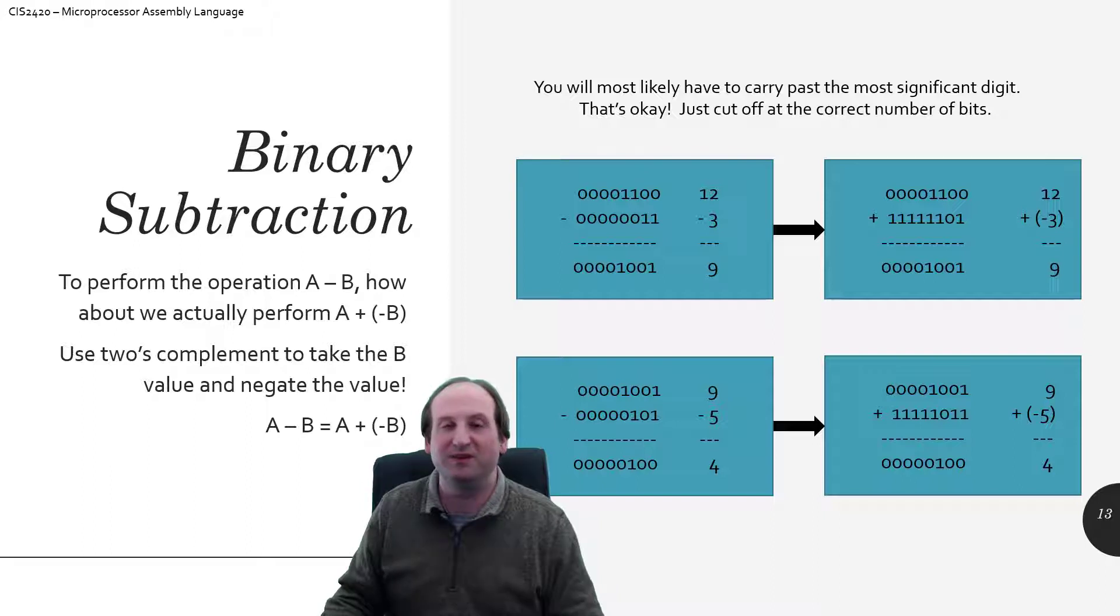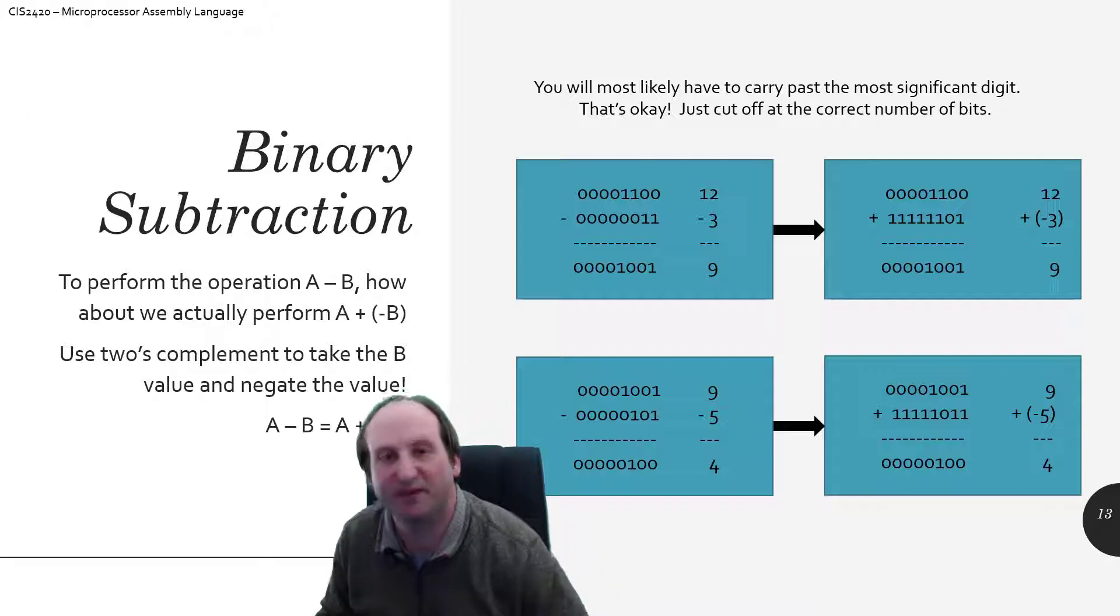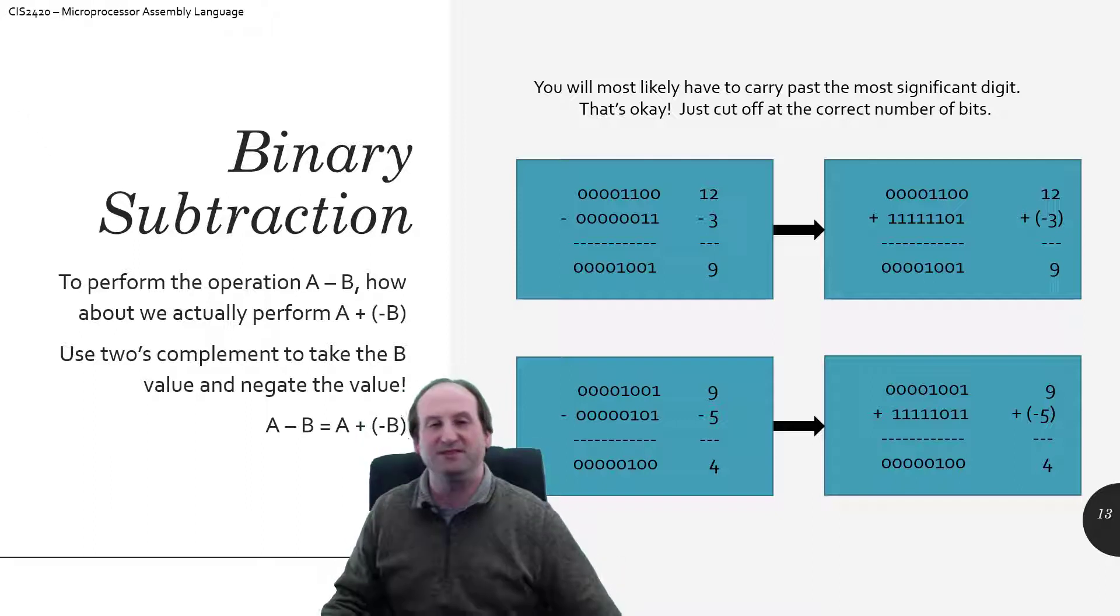But that's not how the CPU does it. The CPU, when you actually do a subtraction on the computer, instead of doing A minus B, it negates the B and actually does an addition. So A minus B is actually A plus negative B. So how does that work for us? So in these two examples, no matter what base system I'm talking about, 12 minus 3 better be 9, and 9 minus 5 better be 4.